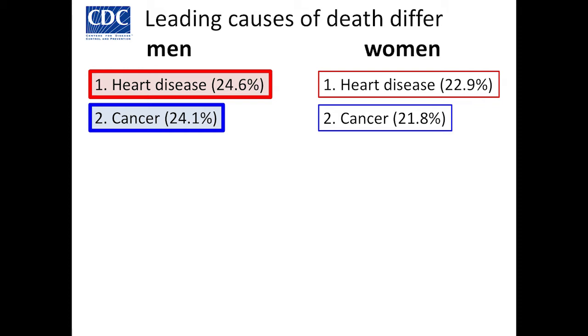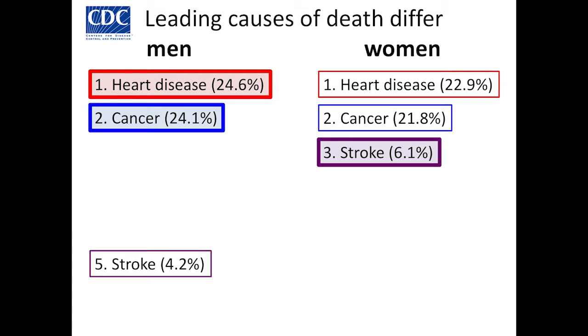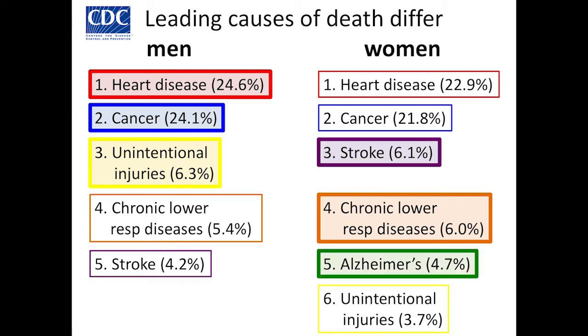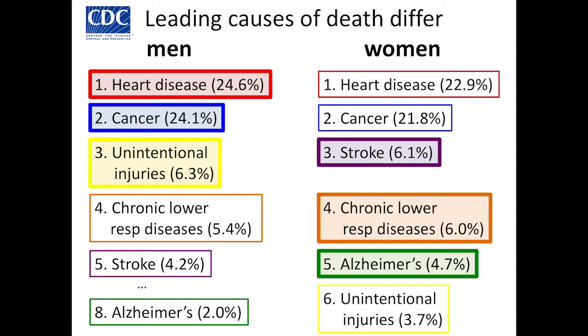We know they differ. Number two for everyone is cancer. Number three is where we start to differ: stroke is the third leading cause of death for women, killing about 2% more. For men, it's unintentional injuries at number three — about twice the rate — while it's number six for women, showing clear behavioral differences. Alzheimer's is number five for women but only number eight for men, and even with age correction, women get Alzheimer's at a higher rate.